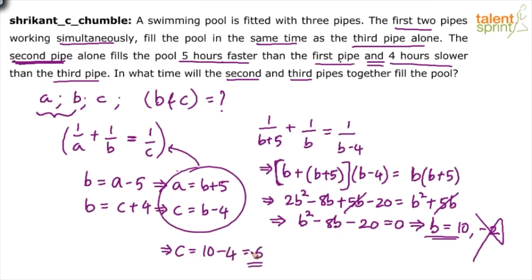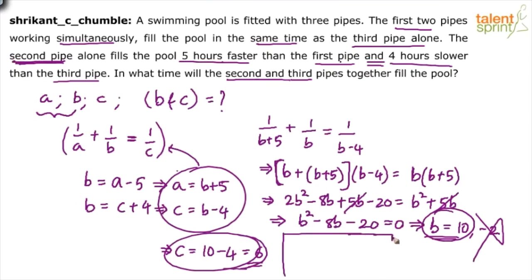Now we know B equals 10 and C equals 6. Using the formula for two pipes working together — XY divided by X plus Y — we get BC divided by B plus C, which is 10 times 6 divided by 16, giving 60 by 16, which simplifies to 15 by 4, or 3.75 hours. So the answer is 3.75 hours.